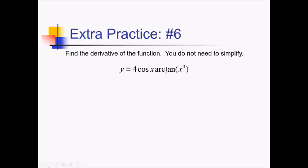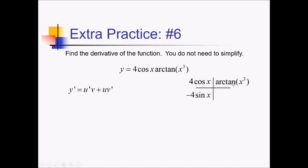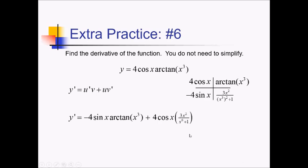On this problem, I want the derivative of this expression, which is going to be a product rule: u prime v plus u v prime. Setting up our box and ribbon, we have factors of 4 cosine of x and arctan of x cubed. The derivative of 4 cosine of x is negative 4 sine of x. The next one requires the chain rule — arctan of something is 1 over the something squared plus 1, so 1 over x cubed squared plus 1 — and multiplying by the derivative of x cubed, which is 3x squared, goes in the numerator. Multiplying back out with the ribbon, we have negative 4 sine of x times arctan of x cubed, plus 4 cosine of x times all of that. And that's a wrap.